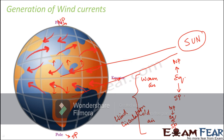This happens because the earth is not static. The earth is constantly rotating about its axis and also moving around the sun. As it moves around the sun, different parts of the earth receive different amounts of sunlight. Due to the earth's rotation on its own axis, the direction of air movement gets influenced, so it is not exactly north-south but slightly in between. This is how wind currents get generated.